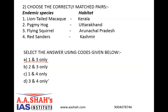The pygmy hog is native to alluvial grasslands in the foothills of the Himalayas at elevations of up to 300 meters. Today, the only known population lives in southern Bhutan and in Assam, India. As the population is estimated at less than 250 mature individuals, it is listed as endangered on the IUCN red list. Hence, the second statement is incorrect.